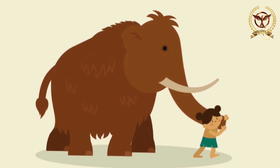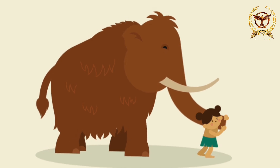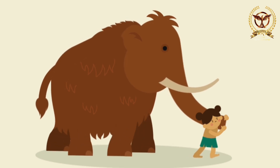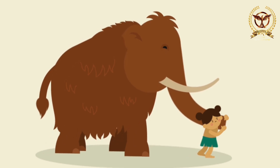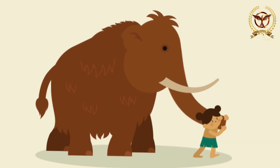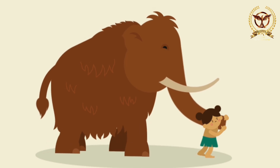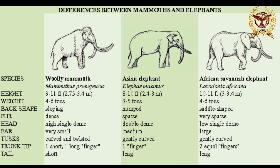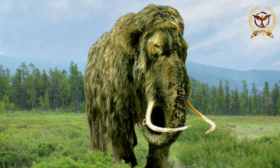Mammoths entered Europe and China about 3 million years ago, and the first species to spread throughout was named M. Romanus. Scientists have noted that only molars of this species are known, which have 8 to 10 enamel ridges. These populations evolved and diverged from the previous type to be replaced by M. Meridionalis.